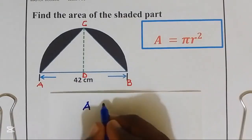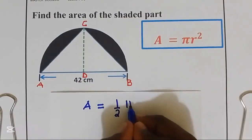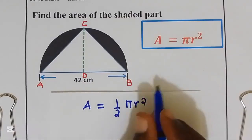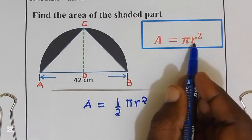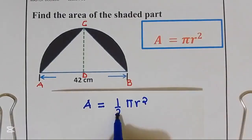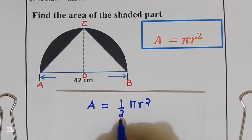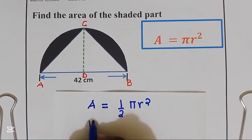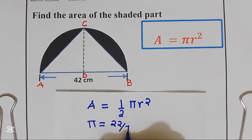The area of a semicircle is equal to a half times π times R squared. The area of a circle is given by π R squared, so for a semicircle we are going to introduce a half because we need half of the area. From our given formula, we have π and we are going to use it as 22 over 7.